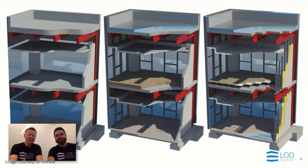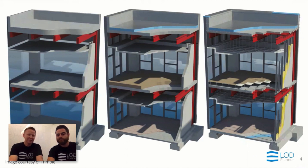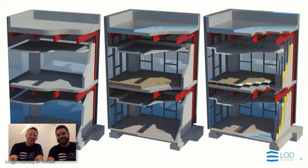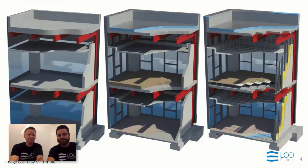Why would we need a plan when it comes to BIM? Isn't it just put some model elements into a virtual building and then use the building? What we see on the screen, courtesy of Trimble, is on the left-hand side there's a BIM, and on the right-hand side there's also a BIM.